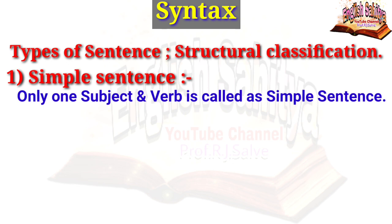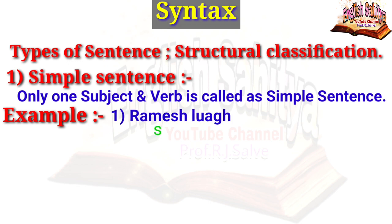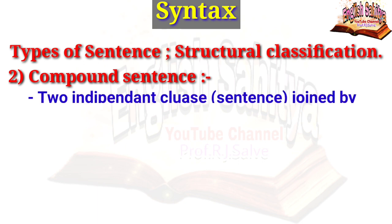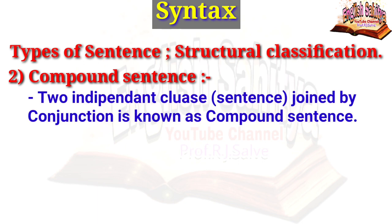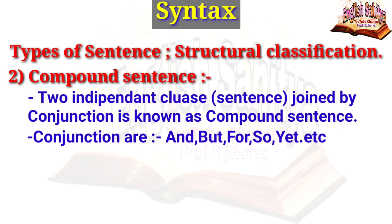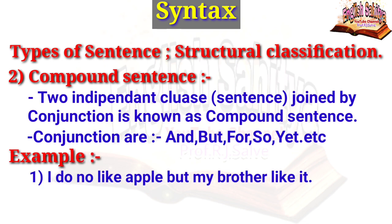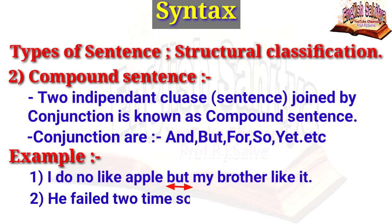A simple sentence has only one subject and one verb. For example, 'Ramesh laughs' — 'Ramesh' is the subject and 'laughs' is the verb. Second example: 'I am tired' — 'I' is the subject and 'tired' is the verb complement. A compound sentence consists of two independent clauses joined by a conjunction such as and, but, for, so, yet, etc. For example, 'I do not like apples but my brother likes it' — 'but' is the conjunction. Another example: 'He fell two times so he left the course' — 'so' is the conjunction.